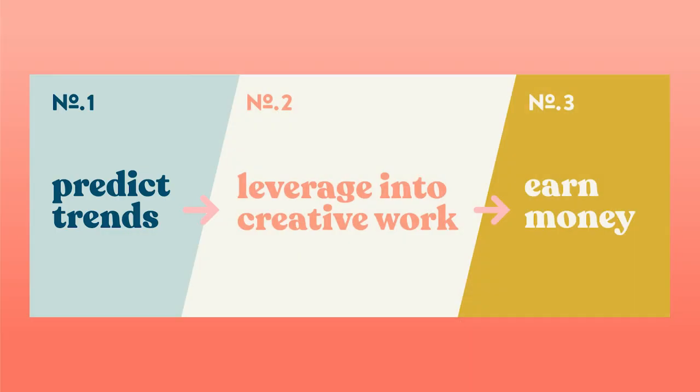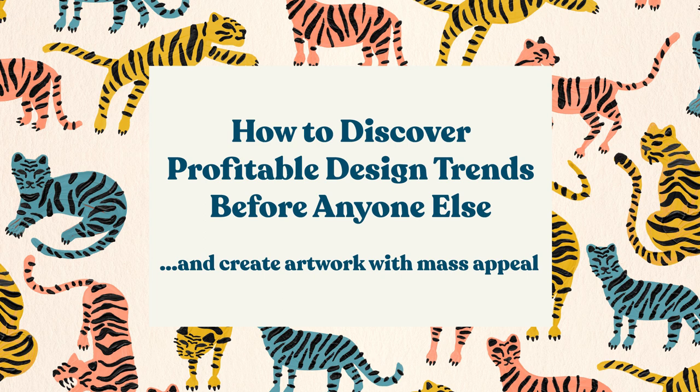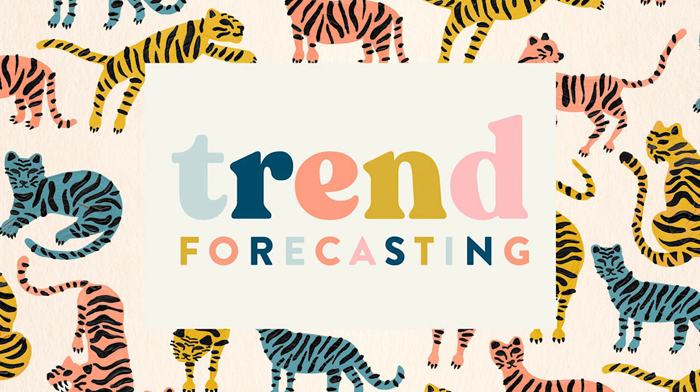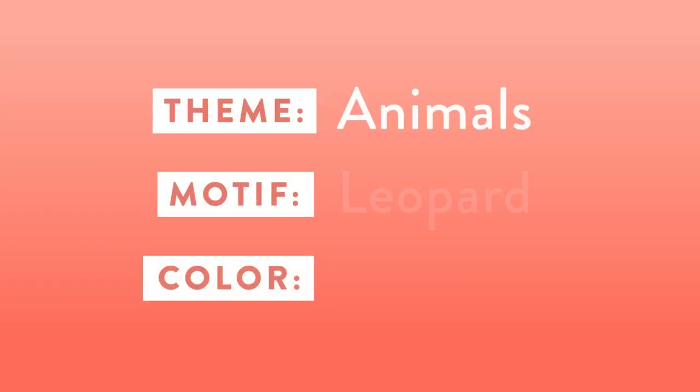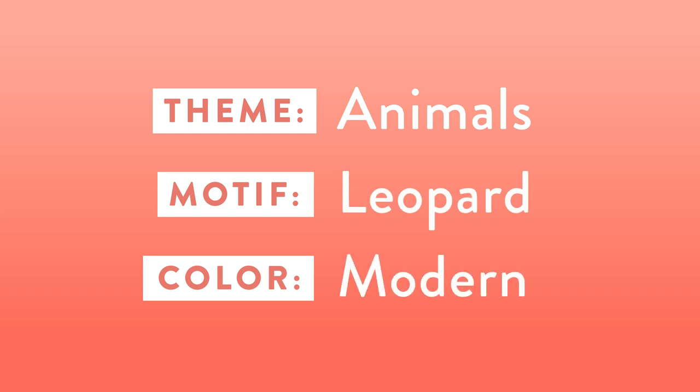If you enjoyed this thought process and strategy, check out my previous class, 'How to Discover Profitable Design Trends Before Anyone Else and Create Artwork with Mass Appeal.' That class has a ton of good nuggets on how to identify trends and incorporate them into your artwork — and popular designs mean more success in licensing. Now that I've got my idea both in terms of what I want to draw — jungle cats — and the colors I want to use, let's get our ideas out of our brains and sketched out on screen in Procreate.